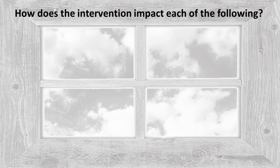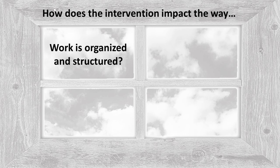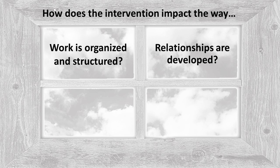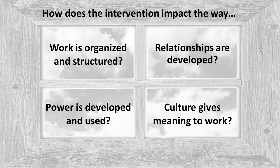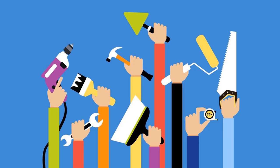How can we decide which intervention is best? The four-frame model can help. It identifies four different frames or ways of thinking about organizations. View each intervention through each frame: How does this intervention impact the way work is organized and structured? The way relationships are developed and nurtured? The way power and influence are developed and used? And the way culture gives meaning and purpose to work? As you can see, determining which intervention is best is not an easy task, but there are plenty of options from which to choose. With experience, managers can become skilled interventionists.